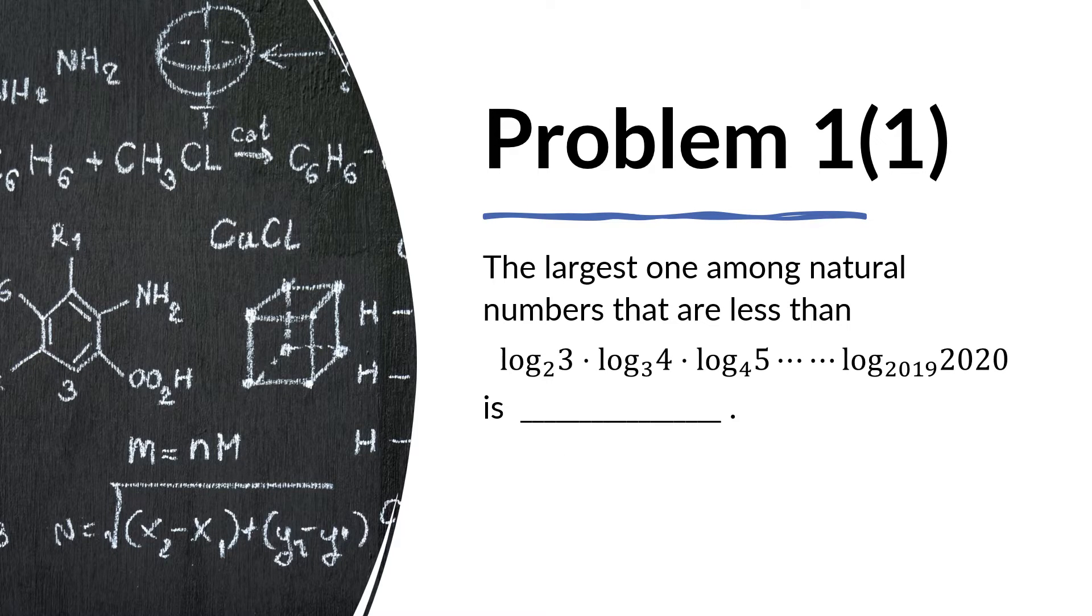Problem one of one reads as follows. The largest one among natural numbers that are less than log of 3 base 2 times log of 4 base 3 times log of 5 base 4 all the way to log of 2020 base 2019 is blank.